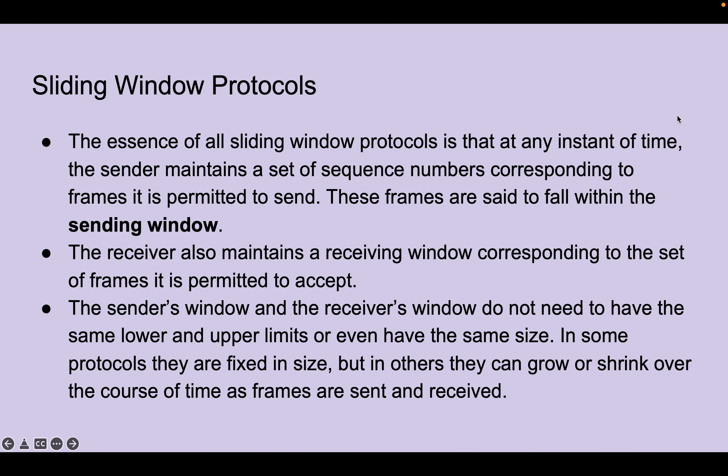The essence of all sliding window protocols is that at any instant of time, the sender maintains a set of sequence numbers corresponding to frames it is permitted to send — these frames are said to fall within the sending window. The receiver also maintains a receiving window corresponding to the set of frames it is permitted to accept. The sender's window and the receiver's window do not need to have the same lower and upper limits or even the same size. In some protocols they are fixed size, but in others they can grow or shrink over time as frames are sent and received.